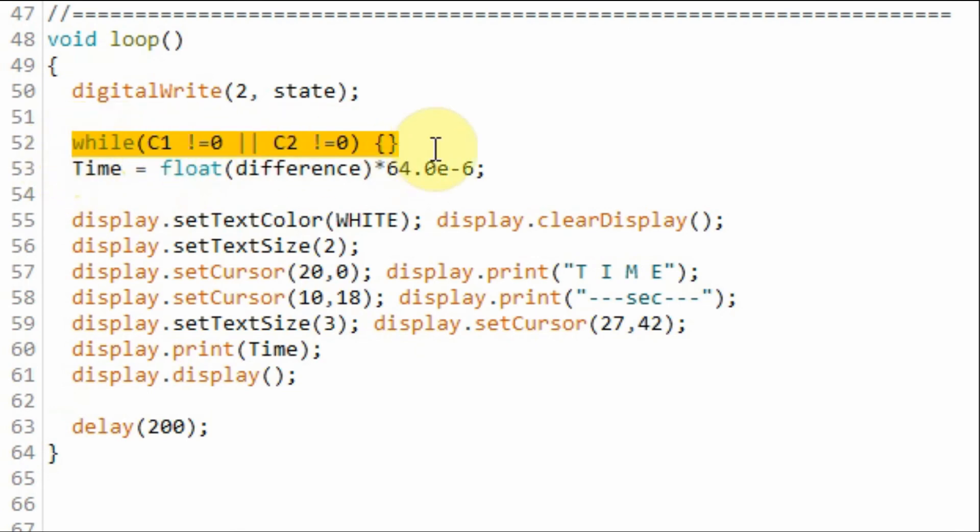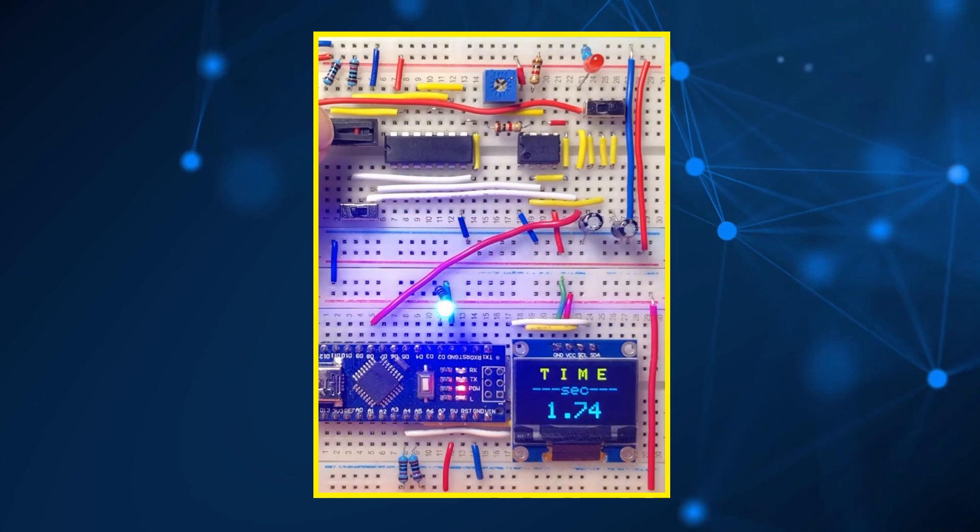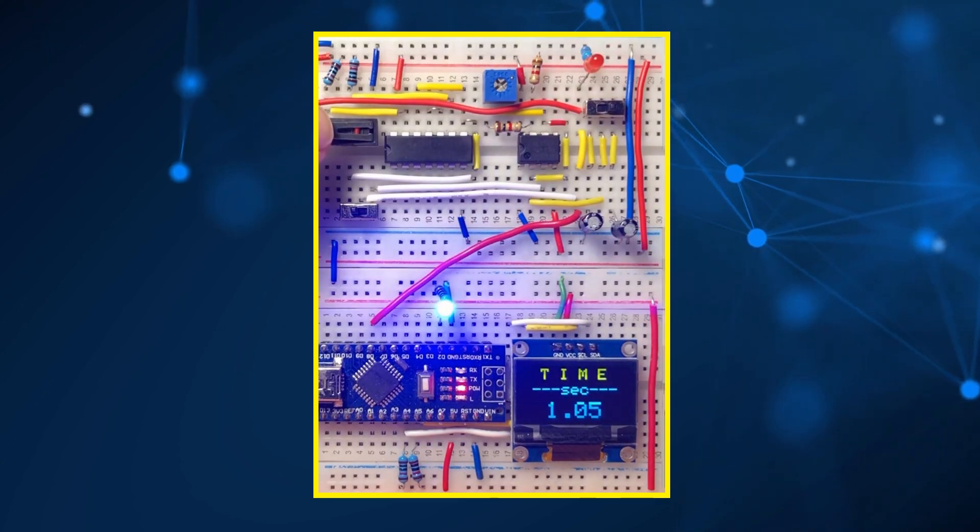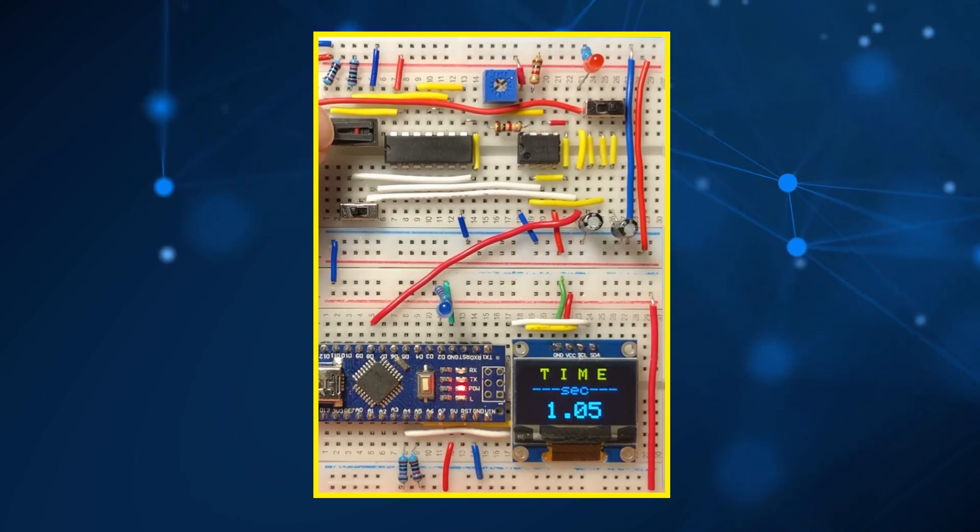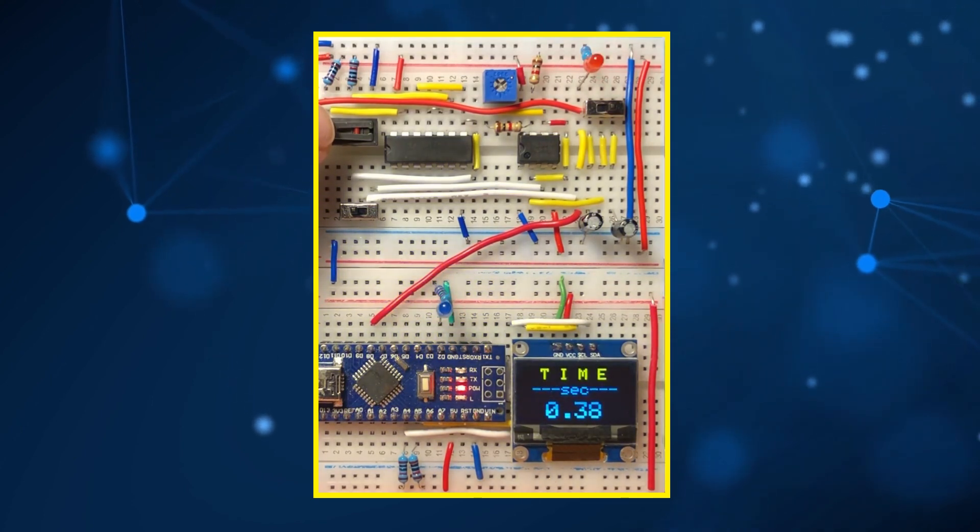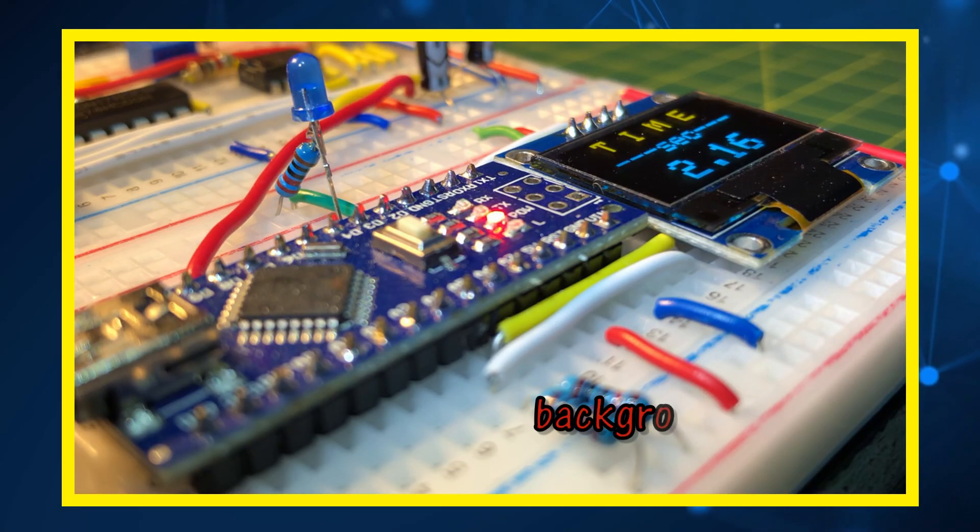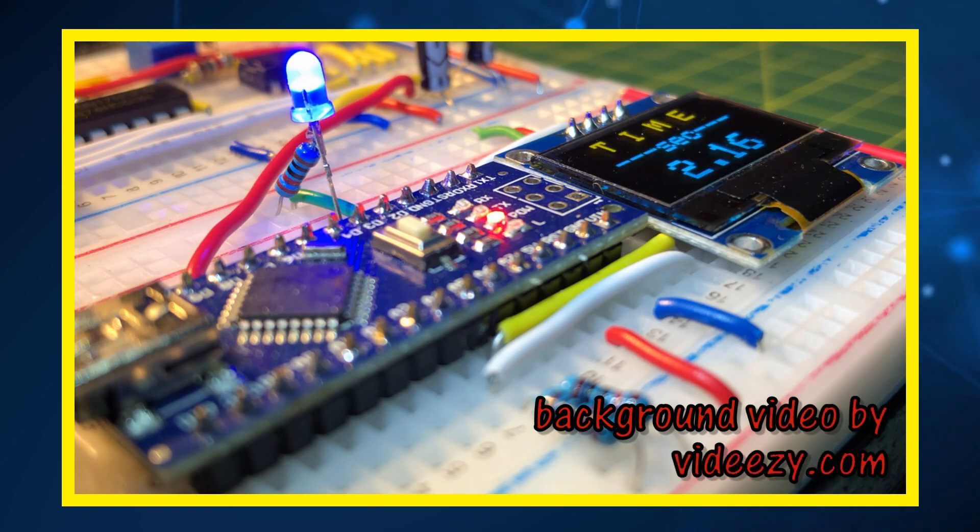Inside the loop function, using this while loop, we will loop indefinitely until we have the two captured values and we have the difference. And once we have the difference, we can then calculate the time using this equation and then display the time on the OLED screen. And now for a quick demonstration. In my next video, I will modify the code to measure the frequency of input periodic signals. Thank you for watching.